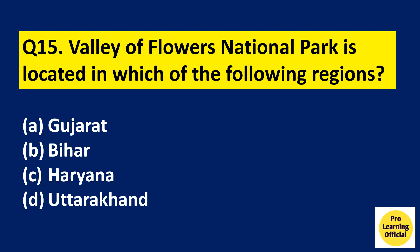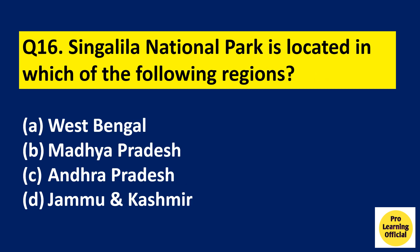Question number 15: Valley of Flowers National Park is located in which of the following regions? Option A: Gujarat. Option B: Bihar. Option C: Haryana. Option D: Uttarakhand. The right answer is Option D, Uttarakhand. Valley of Flowers National Park is located in the Chamoli district of Uttarakhand and is a UNESCO World Heritage Site.